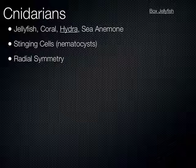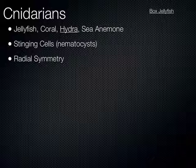Our next group are the cnidarians. These include things you're familiar with, like jellyfish, coral, and sea anemones — these are all cnidarians. What's one of the defining characteristics of those organisms?